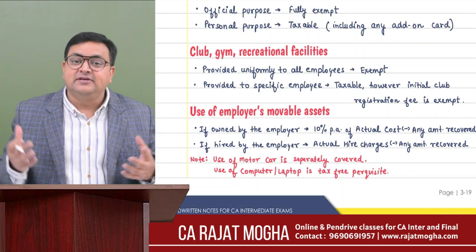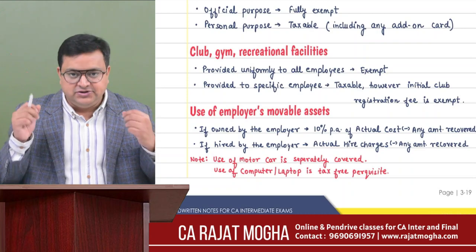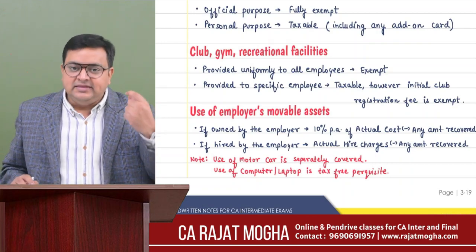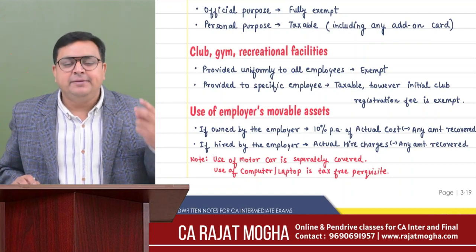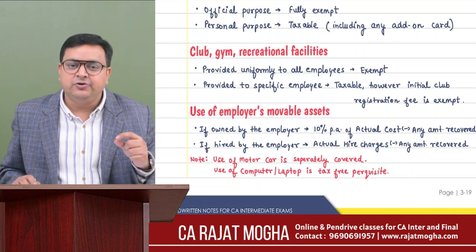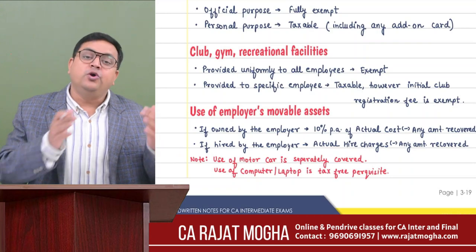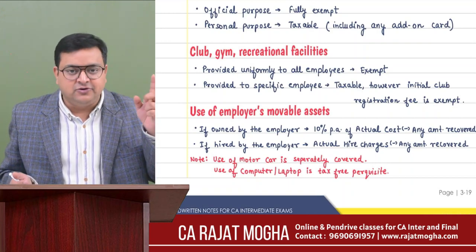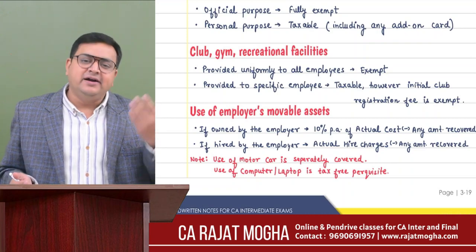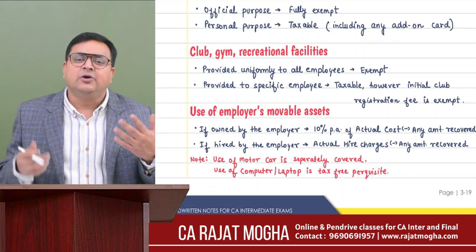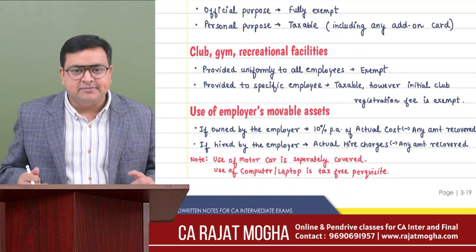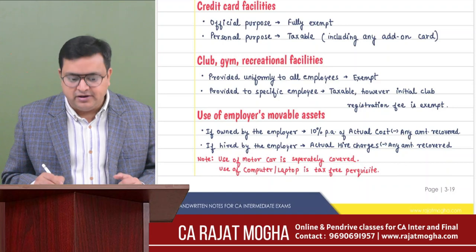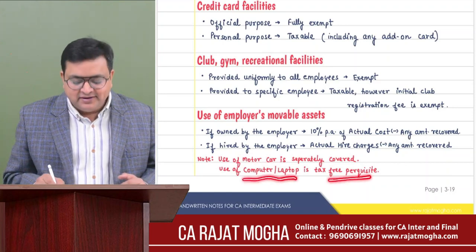Other than that, if any other asset is provided — let's say during summers the employer provides you an air conditioner or furniture, and if you resign you give it back — this becomes a perquisite. The perquisite value depends on whether the asset is owned by the employer or hired. If owned by the employer: 10% of actual cost minus any amount recovered. If hired: hire charges minus any amount recovered.